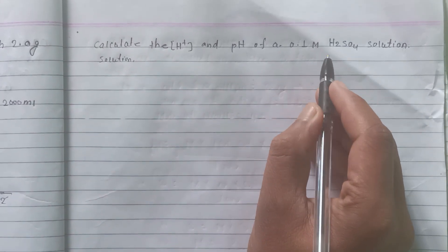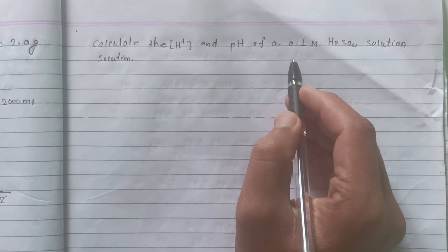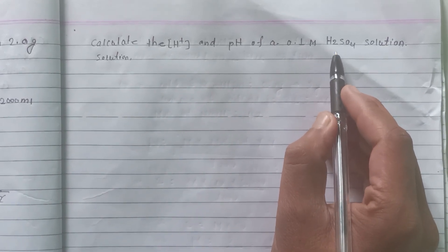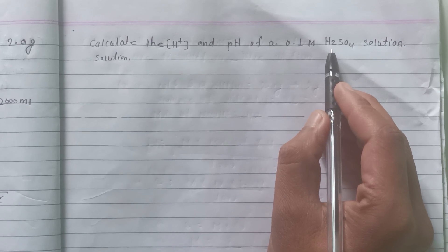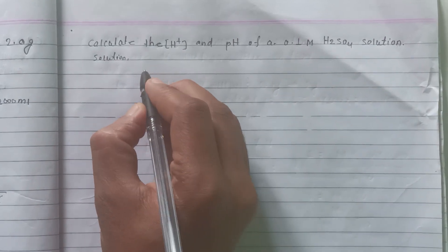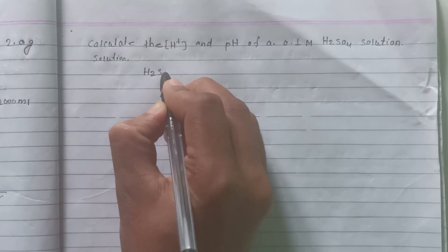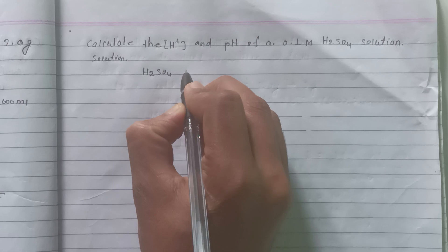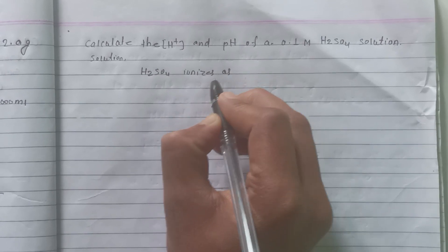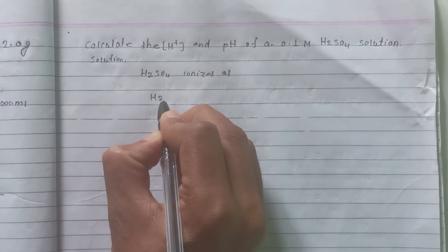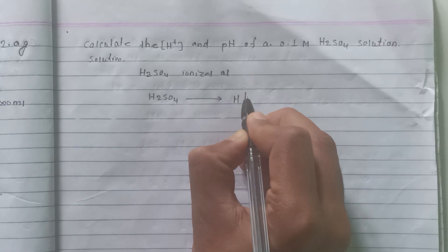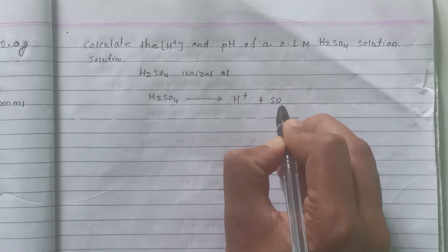H2SO4 is a strong electrolyte, completely ionized. H2SO4 ionizes as H2SO4 → 2H+ + SO4^2-.